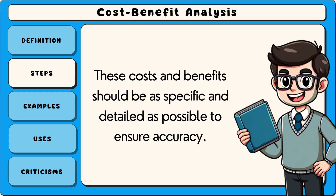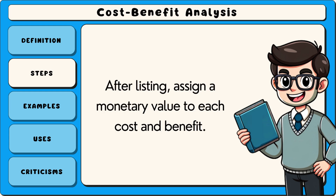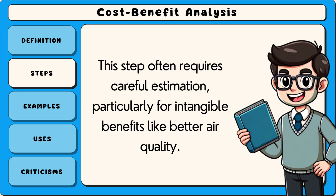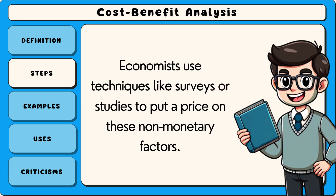These costs and benefits should be as specific and detailed as possible to ensure accuracy. After listing, assign a monetary value to each cost and benefit. This step often requires careful estimation, particularly for intangible benefits like better air quality. Economists use techniques like surveys or studies to put a price on these non-monetary factors.